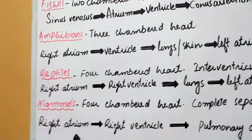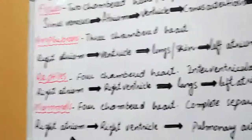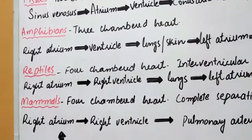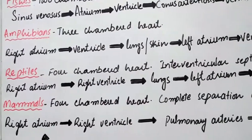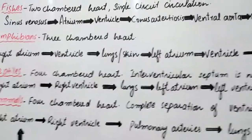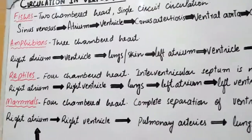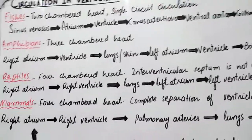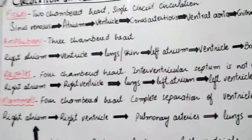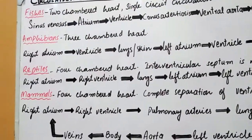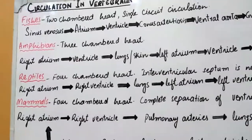In amphibians, deoxygenated blood through the venous system enters the right atrium, then goes towards the ventricle. From the ventricle, it enters the lungs or can also go to the skin for oxygenation. In amphibians, respiration can be cutaneous, where the skin capillaries help in oxygenation — the capillaries present beneath the skin assist in oxygenating the blood.